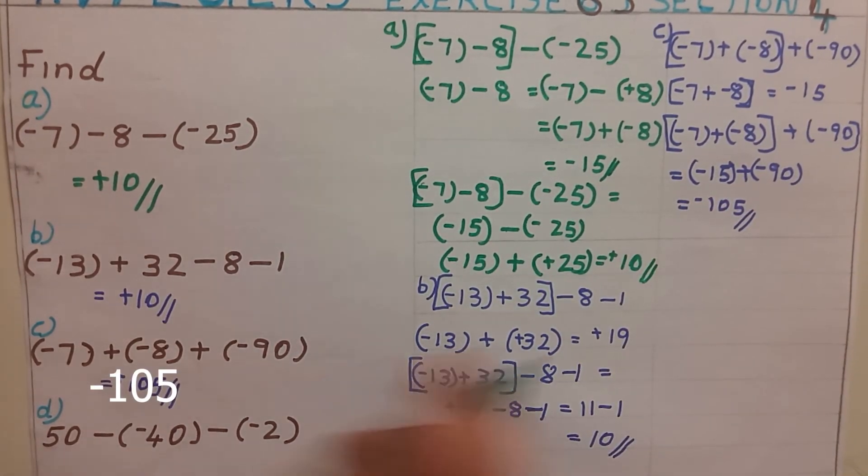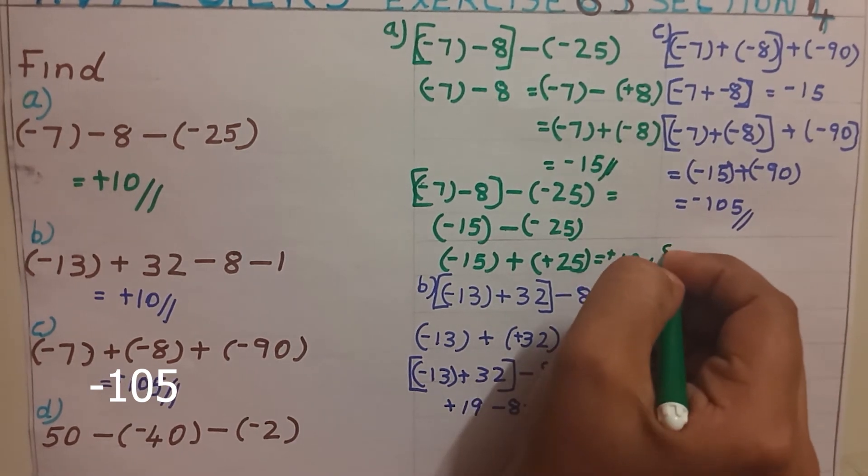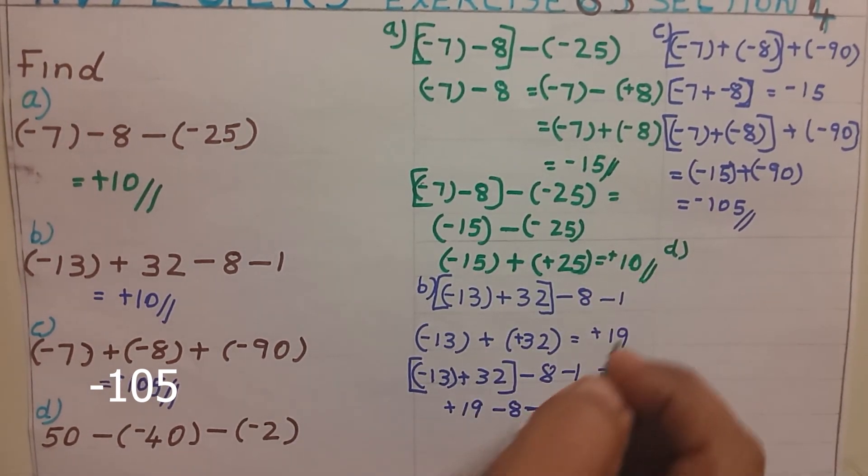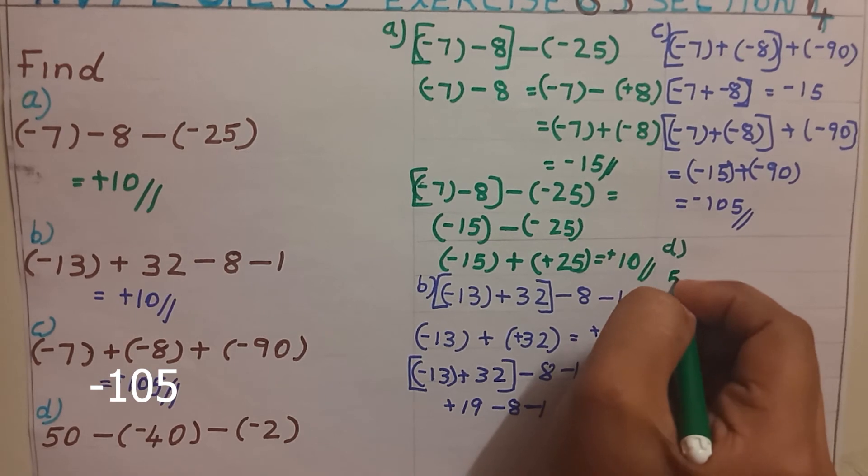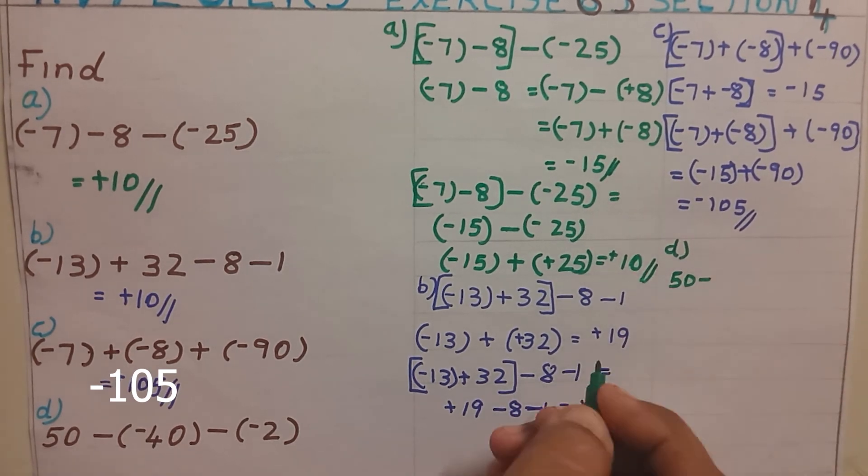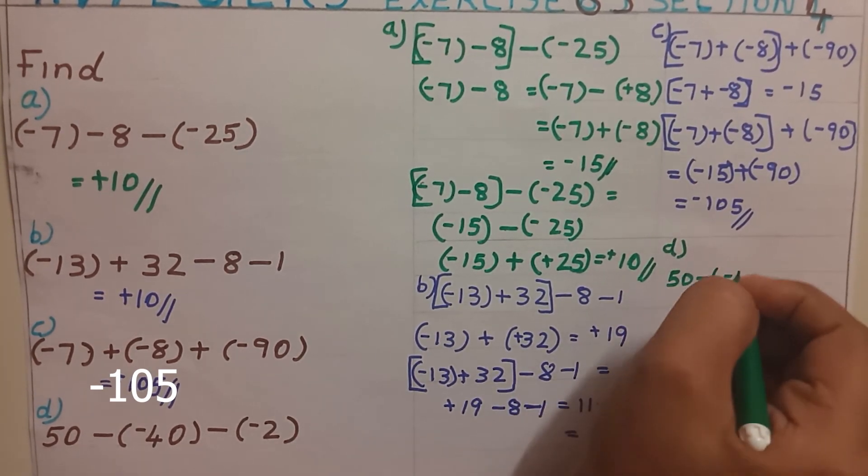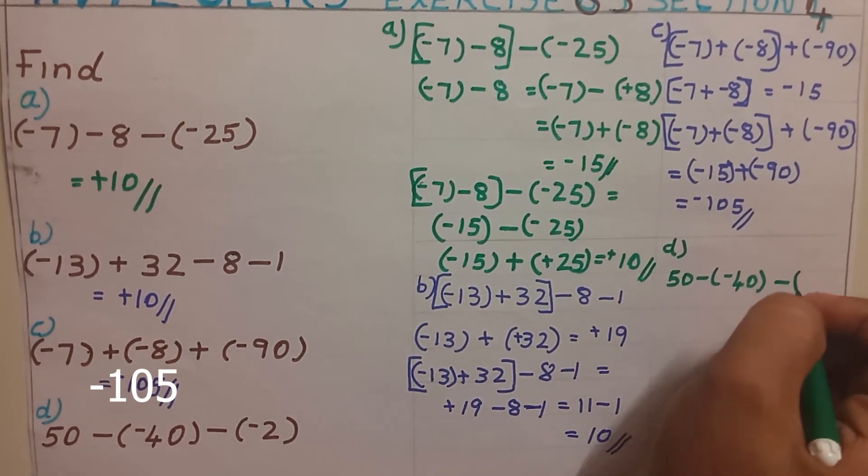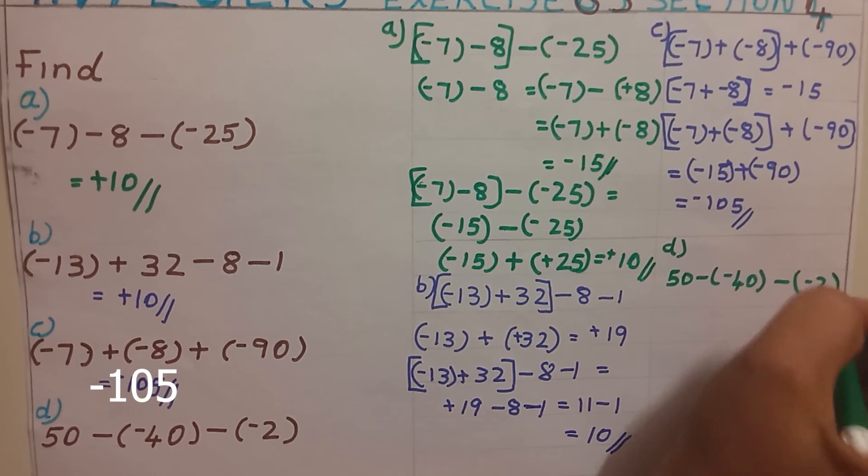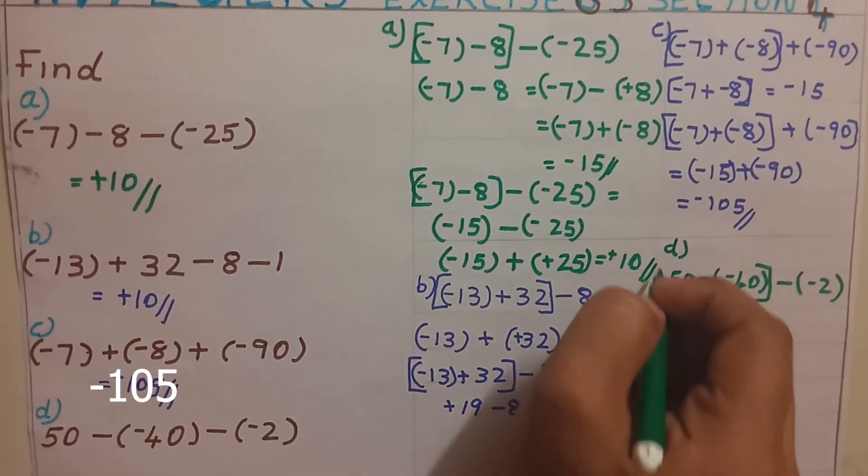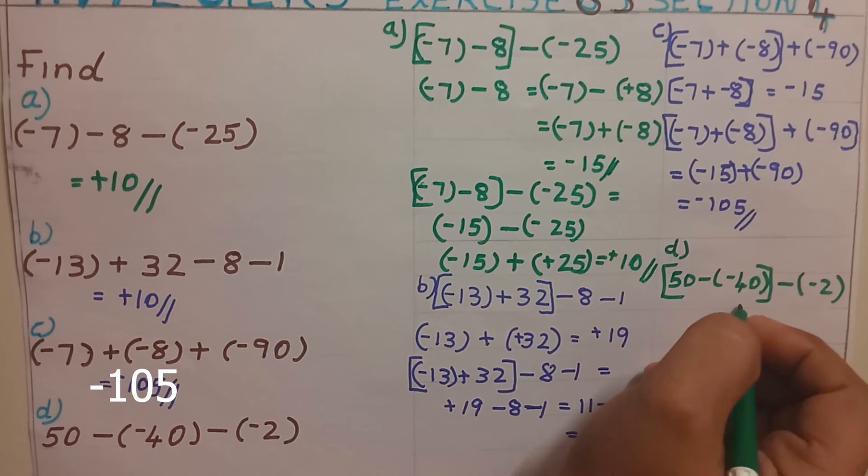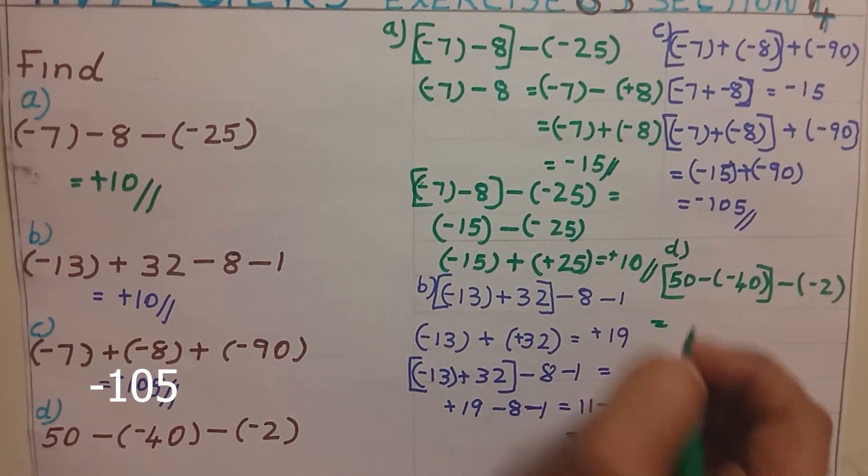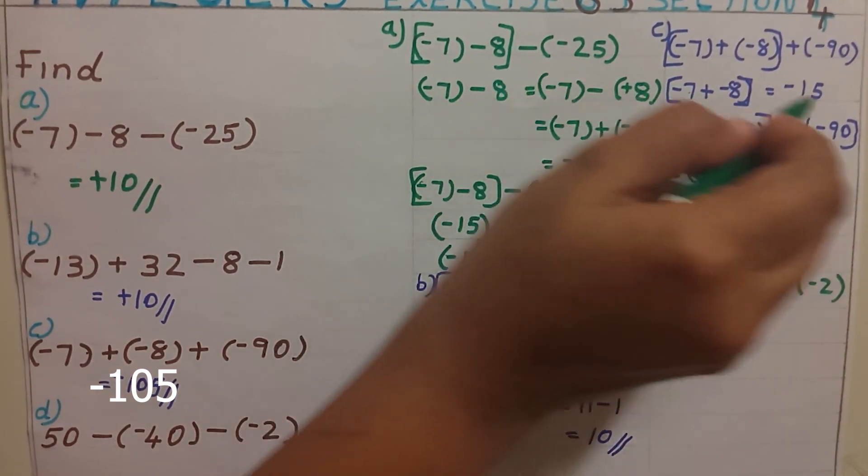Next one D: 50 minus of minus 40 minus of minus 2. Selecting the first two numbers. From here itself we can change the number like this, avoiding these steps.